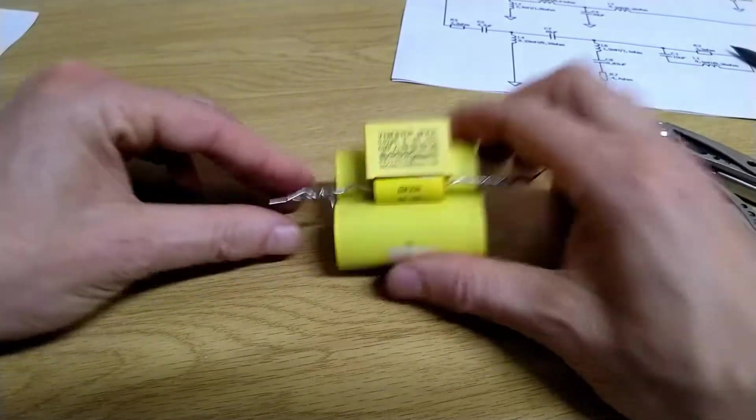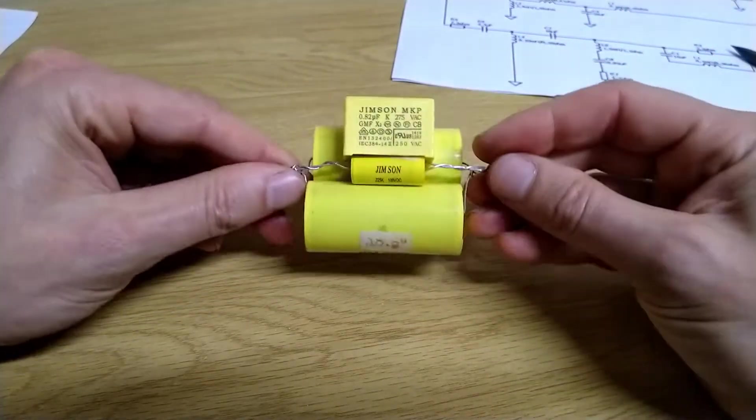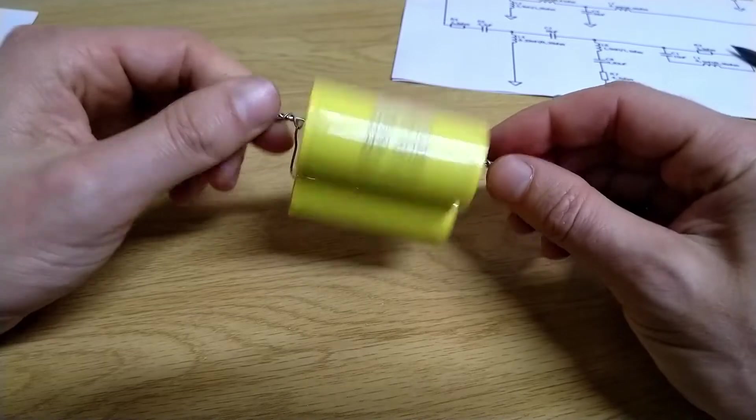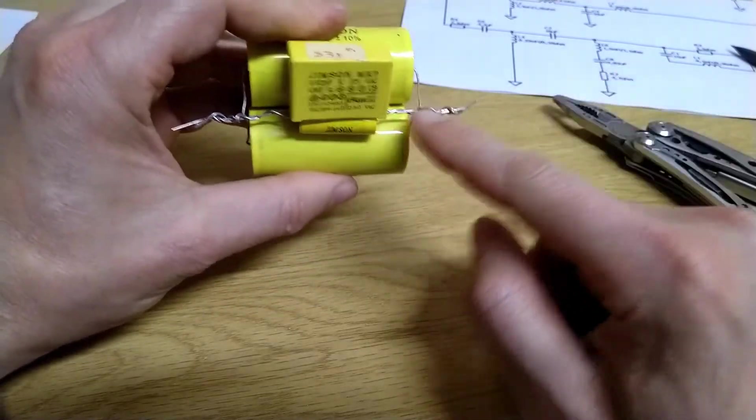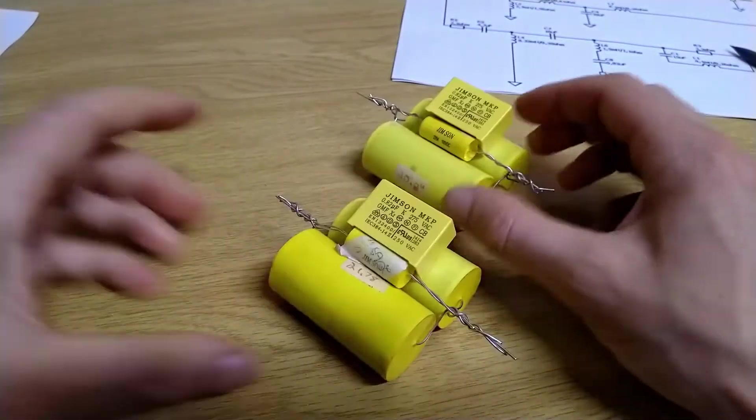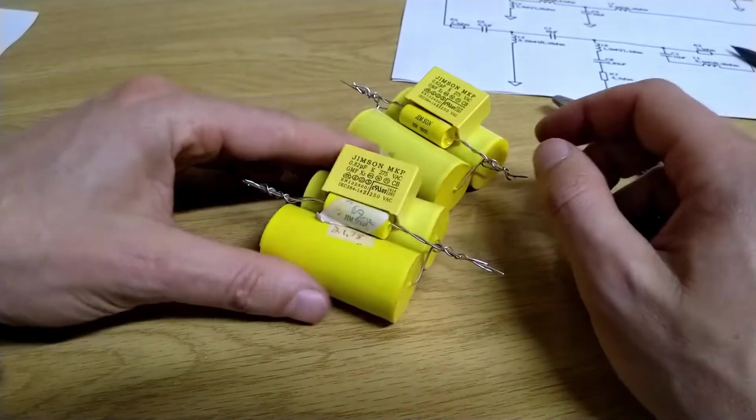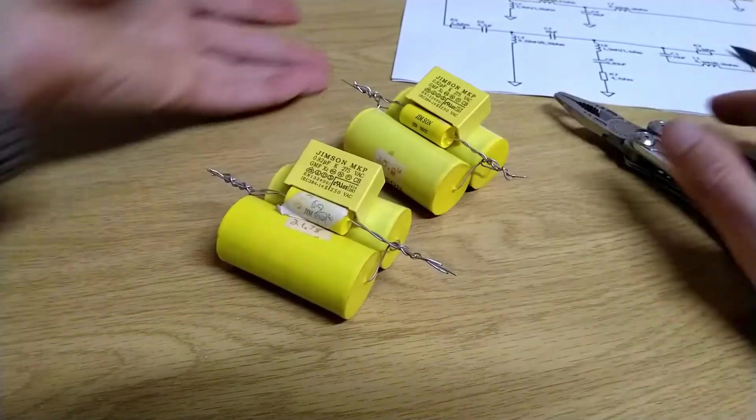Now effectively we've got one 47 microfarad capacitor now. When this is done I'll solder this together. Now we've got two, so great. I only have to do that for six more of these. Let's get busy.